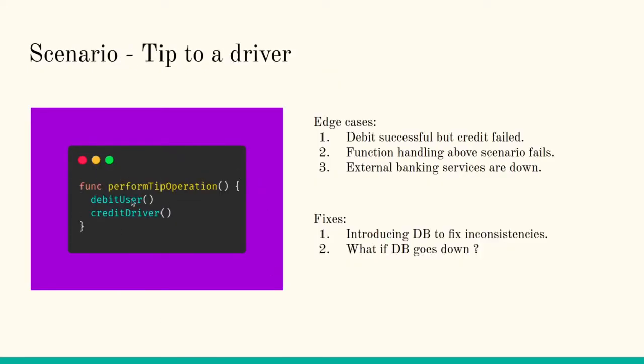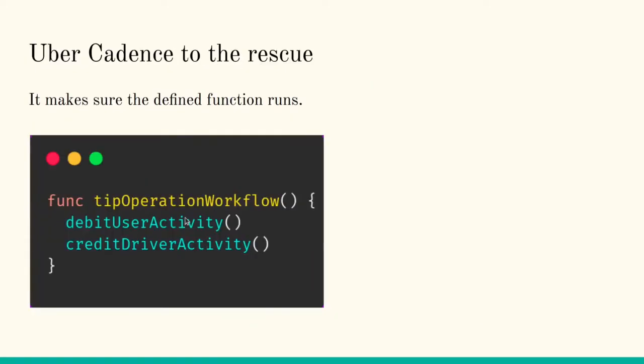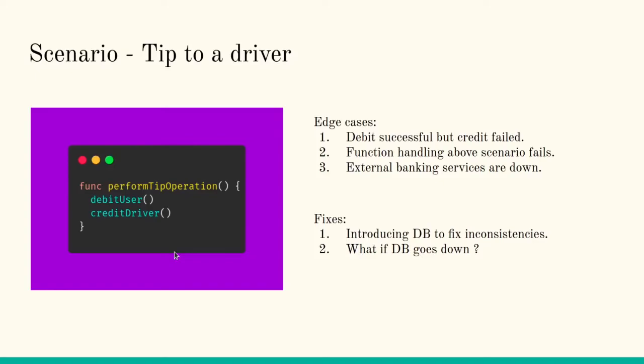If we take a look at this function, you can see that we have this perform tip operation. Cadence will make sure that the debit user happens. It should not fail anyhow, and it will also make sure that after debit user is successful, credit driver will also happen. What happens when we do this? When you take the help of a software which can manage all these complexities separately, we can definitely focus on the business logic that we are going to handle, and it will be quite easy to write those business logic just ignoring the edge cases that will be handled by Cadence itself.